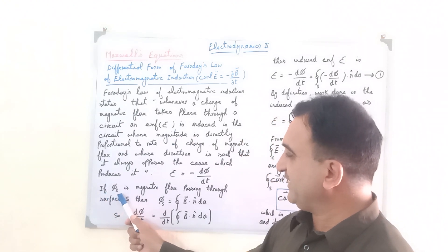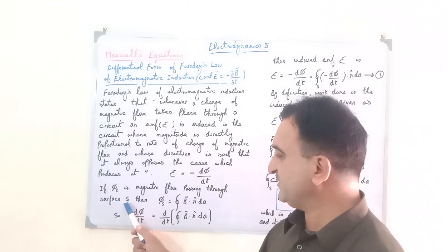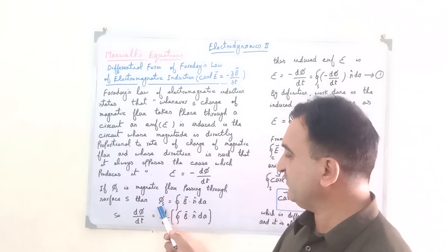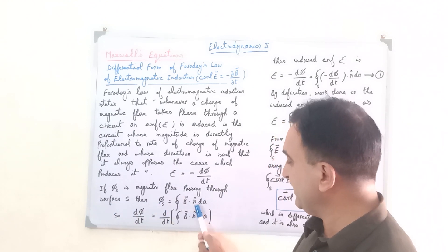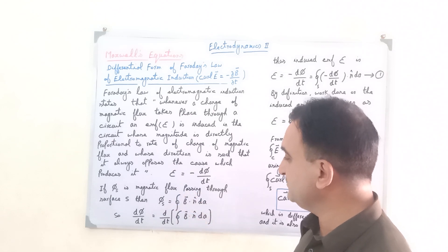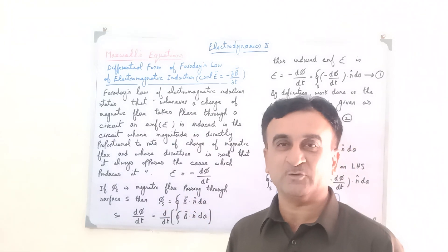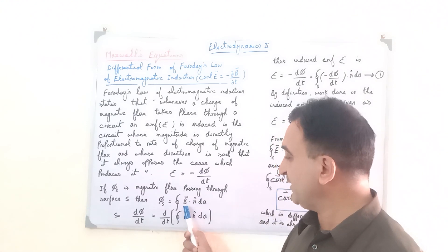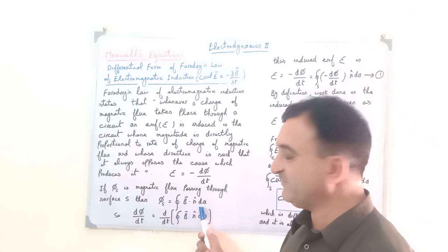If phi is magnetic flux passing through a surface, then we can write phi is equal to B dot n unit vector dA integrated over the surface. This is the definition of magnetic flux, the dot product of magnetic flux density B and vector area.